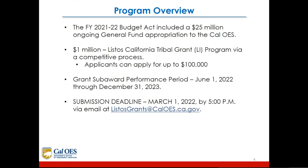The fiscal year 2021-22 budget act included a $25 million ongoing general fund appropriation to the CalOES. $1 million is allocated to the Listos California Tribal Grant LI program via competitive process. Applicants can apply for up to $100,000. The grant subaward performance period is from June 1st, 2022 through December 31st, 2023. The submission deadline is March 1st, 2022 by 5 p.m. via email at listosgrants@caloes.ca.gov.